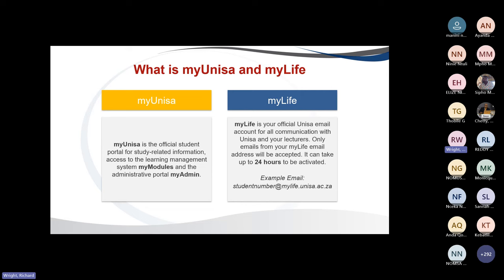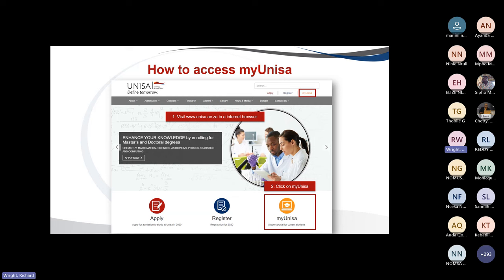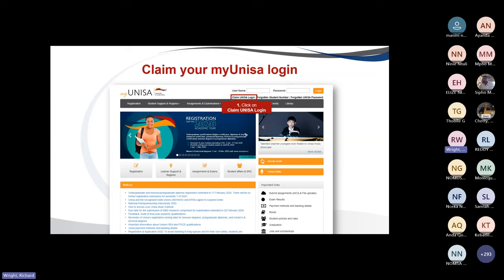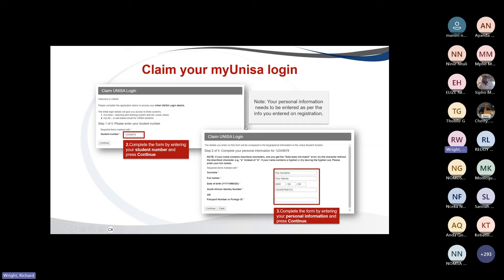To access MyUnisa, the easiest way is from the UNISA main homepage — click on the MyUnisa icon. This will open the MyUnisa portal with access to student support resources, the latest news, and quick access to the library. To log in for the first time, you'll need to claim your UNISA login. Your student number is usually your reference number from your application. Insert your information as per your registration, including date of birth and identity or passport number. Then acknowledge all the checkboxes and you will be provided with your password.